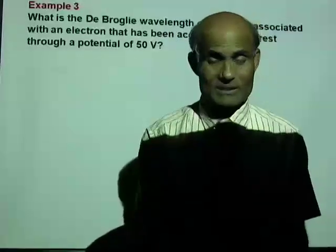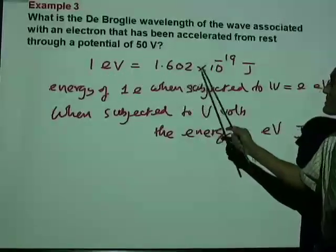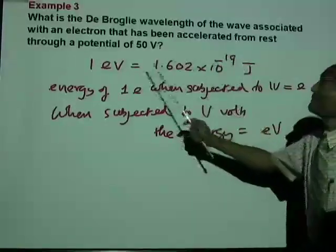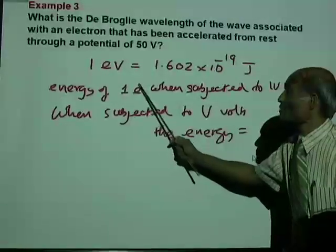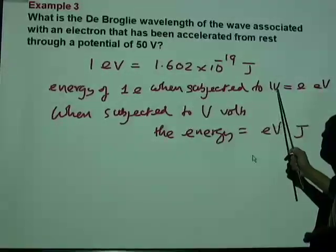Well, 1 electron volt is 1.602 times 10 to the negative 19 joules. And this is the energy of 1 electron, 1E, when subjected to 1 volt.